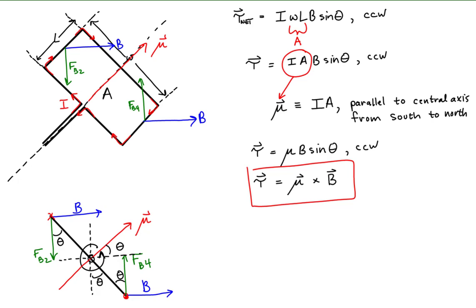From the sine of the angle between the dipole moment and the magnetic field, we can see that the torque is zero when the magnetic moment is aligned either parallel or anti-parallel to the magnetic field, and is maximum when the magnetic moment is perpendicular to the field. It is this magnetic torque that causes magnetic dipoles, like a compass needle, to rotate until aligned with a magnetic field.